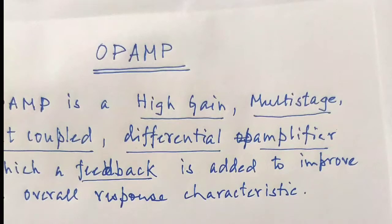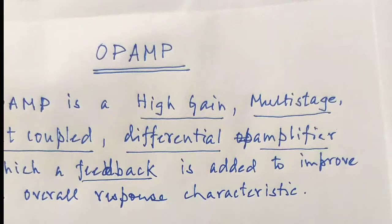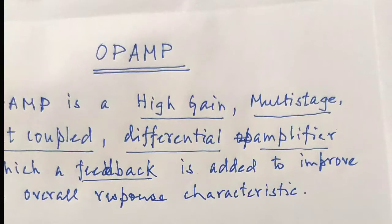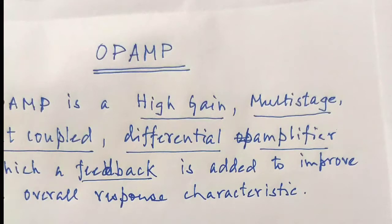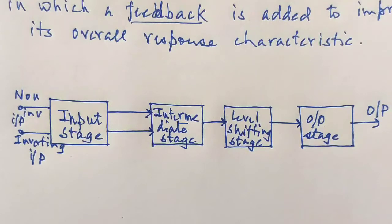The last term is feedback. Whenever a portion or the entire output voltage of an amplifier is fed back to its input, the process is known as feedback. Feedback is added to improve the overall response characteristic of the amplifier. So the definition of an op-amp is: a high gain multi-stage direct coupled differential amplifier in which feedback is added to improve its overall response characteristic.